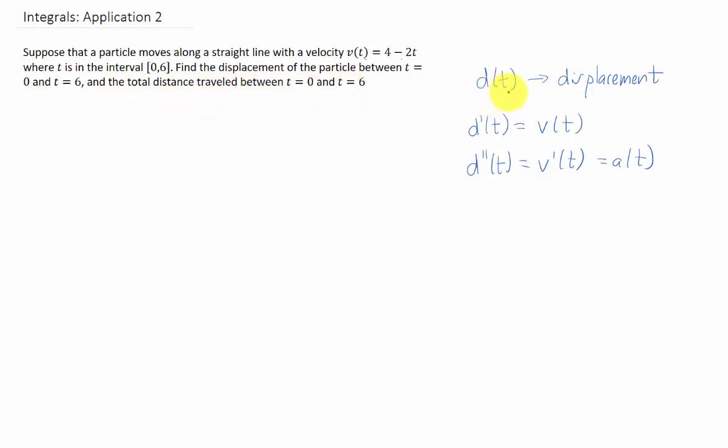Now we can recall that if we have a function, d(t), that represents the displacement or the position of the particle at time t, then the first derivative of that displacement function is the velocity function. The second derivative of the displacement function, also the first derivative of the velocity function, is then the acceleration function.